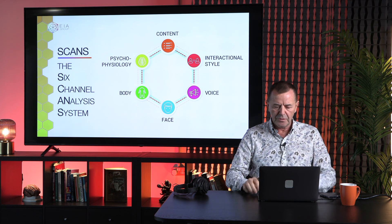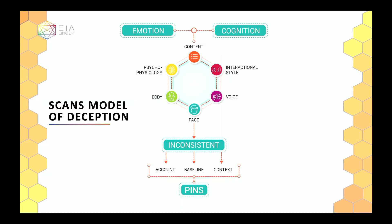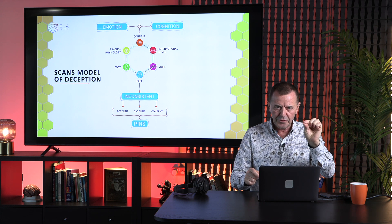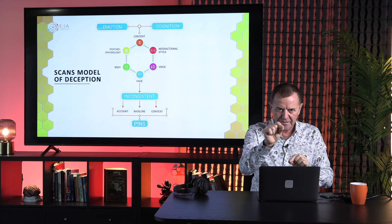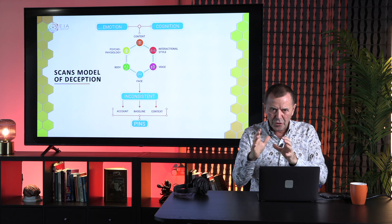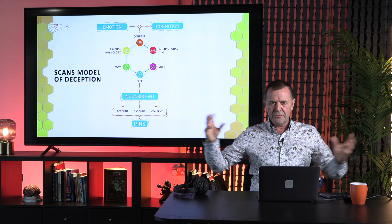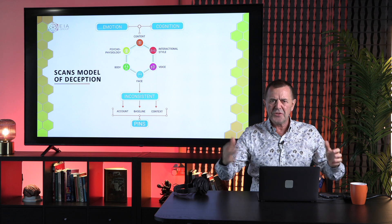This is the SCANS model of deception. At the core you'll see the six channels, and at the top you've got emotion and cognition — what people are thinking and feeling — because that can ooze out and leak from one or more of the channels. If there's an inconsistency between what the person is saying and one of those channels, we call that a PIN — a point of interest — unless it can be explained by the story, which we call the account, the habits and ticks of the person we call baseline, or the context: the micro context of this interview, or the macro context of cultural differences, what's gone before, what's coming after, and the stakes for the individual.